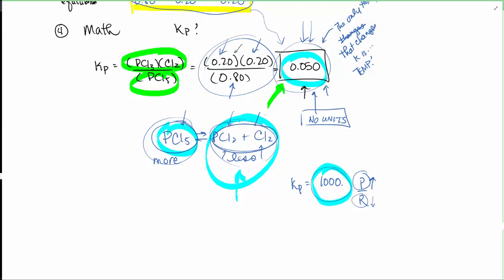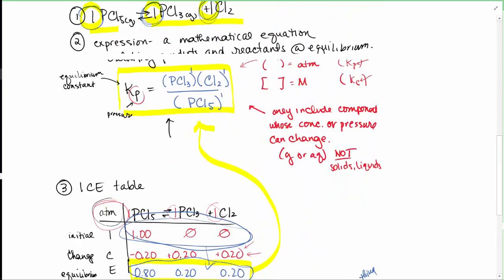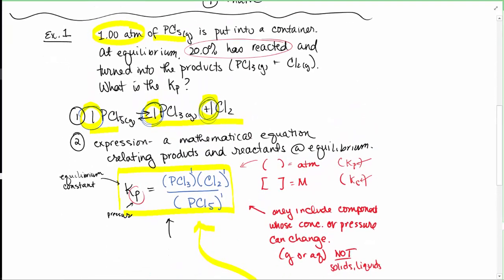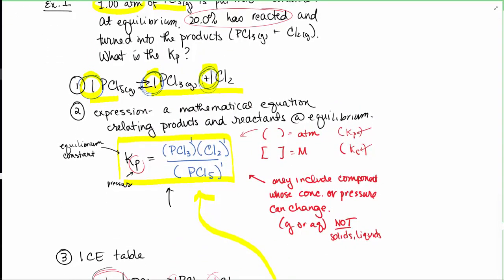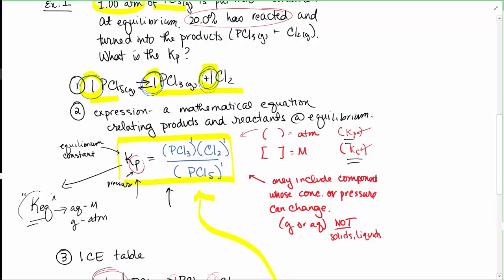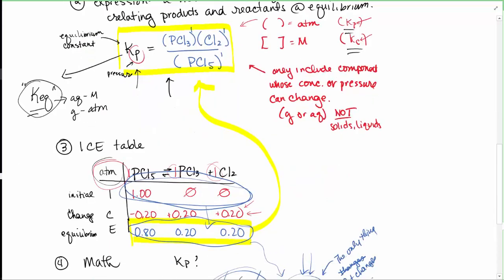We're picking up from where we left off on the last video. As a reminder, we did the first example of the decomposition of PCl5 and went through the equilibrium constant. That's K sub P when all units are pressures. Kc uses molarity, and generically it's called Keq. For aqueous solutions use molarity, for gases use atmospheres — which means some Keq expressions might mix molarity and atmospheres.